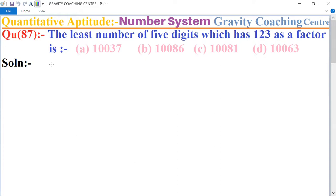So we know that the least five digit number equals 10000, which is one and four times zero. Now we divide 10000 by the number 123.